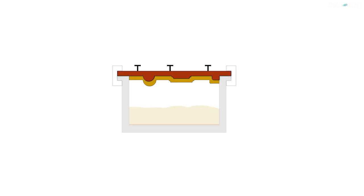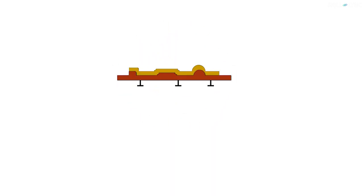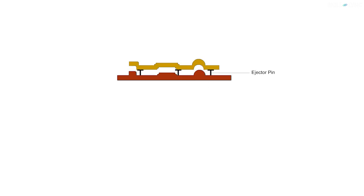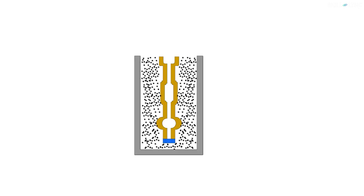The pattern is then removed from the mold. To facilitate this removal, a lubricant is coated over the pattern at the start of the process. Ejector pins are also used to help in easy removal of the pattern. As soon as both halves of the mold are obtained, they are assembled to form the complete shell mold by joining and clamping them properly.